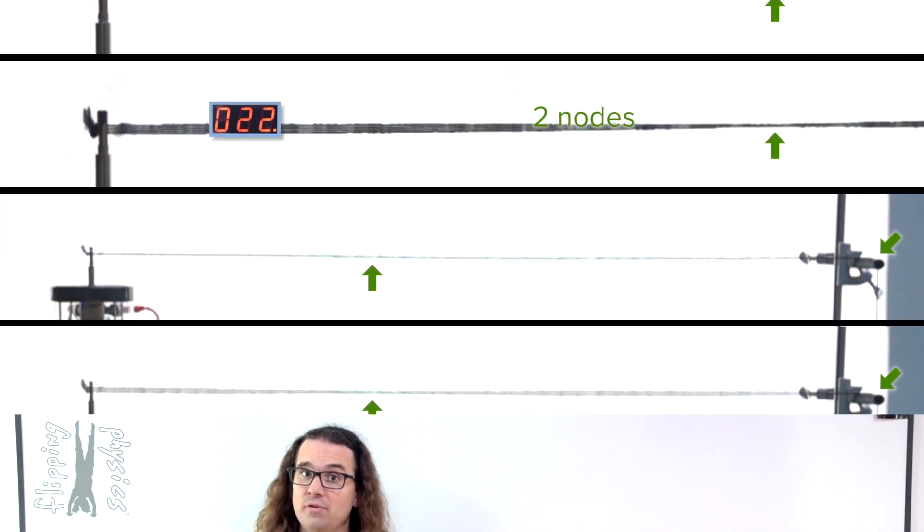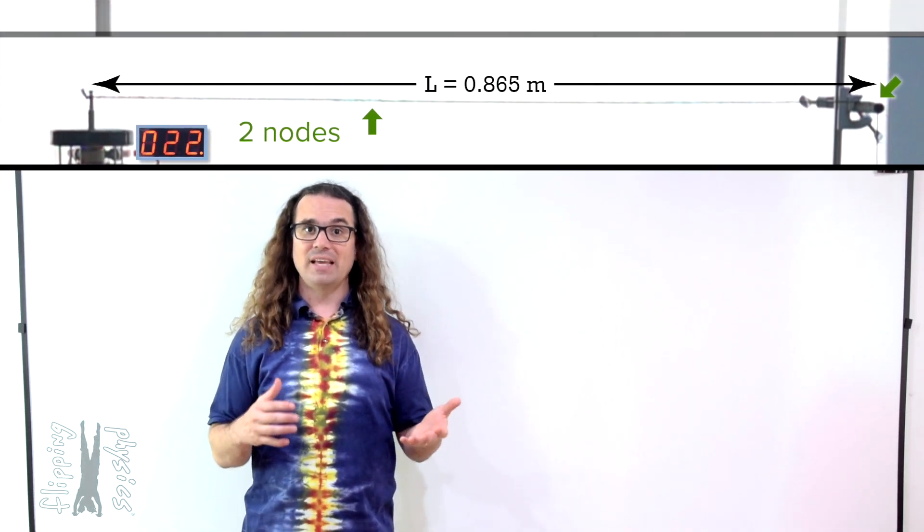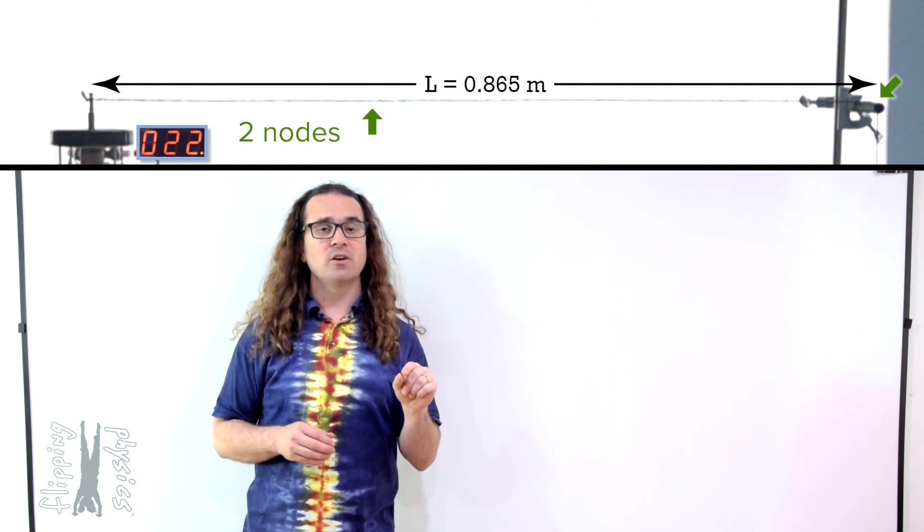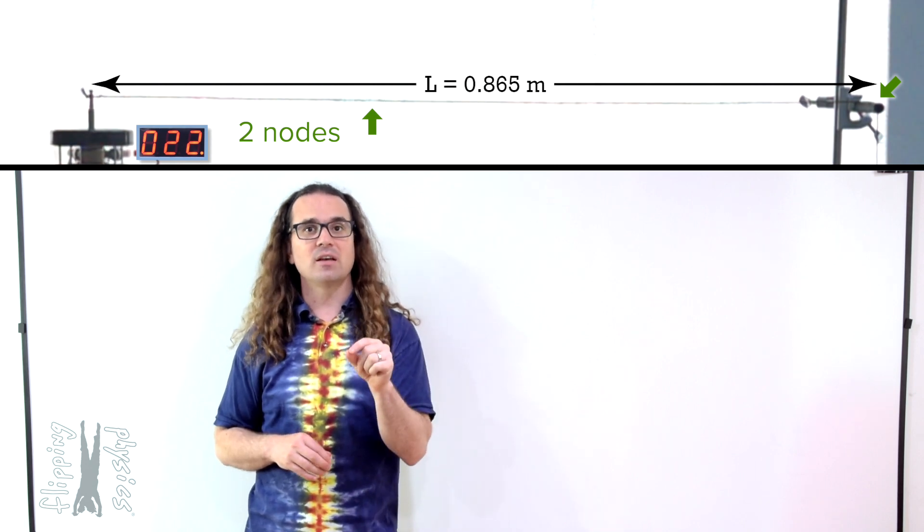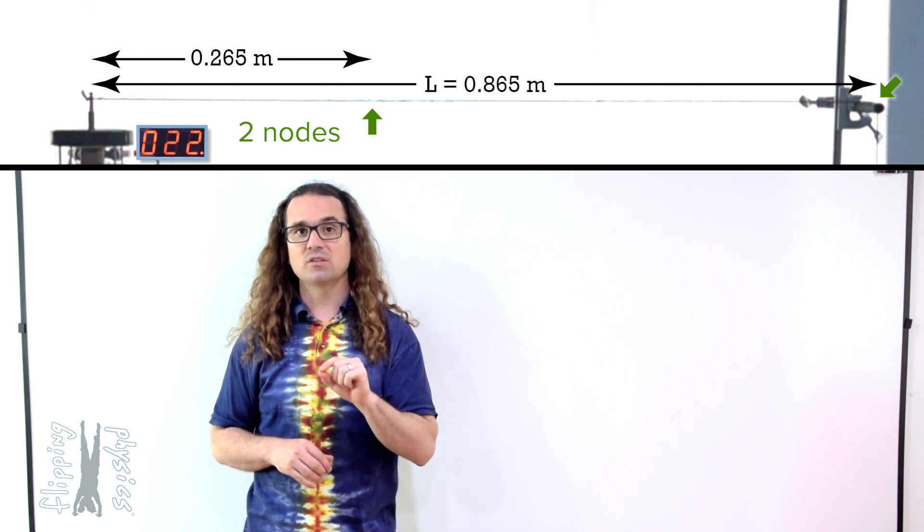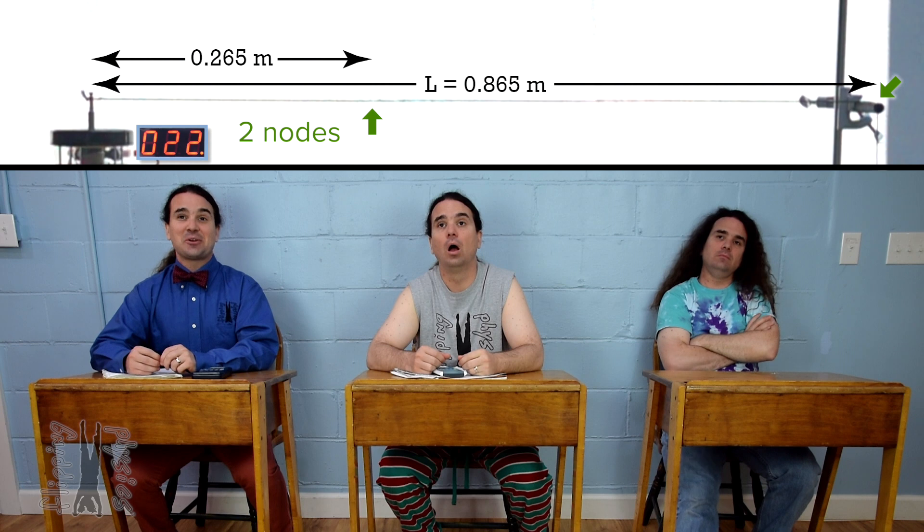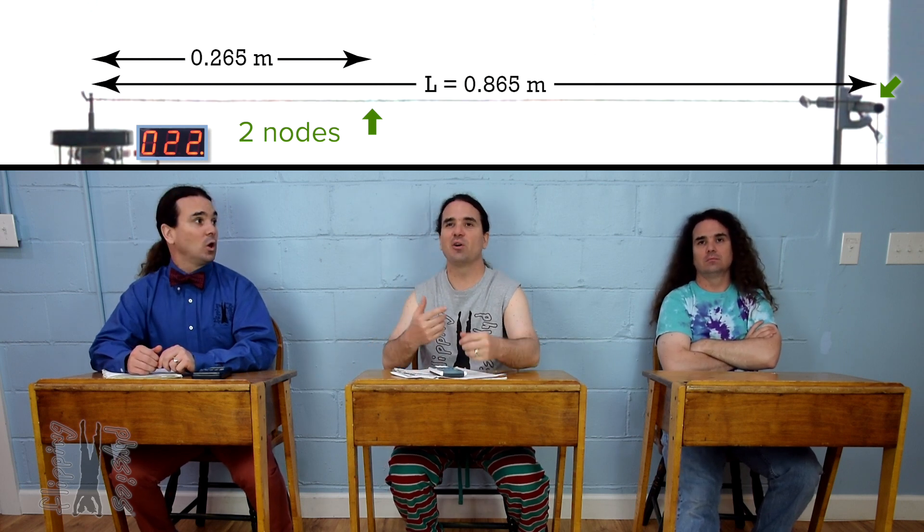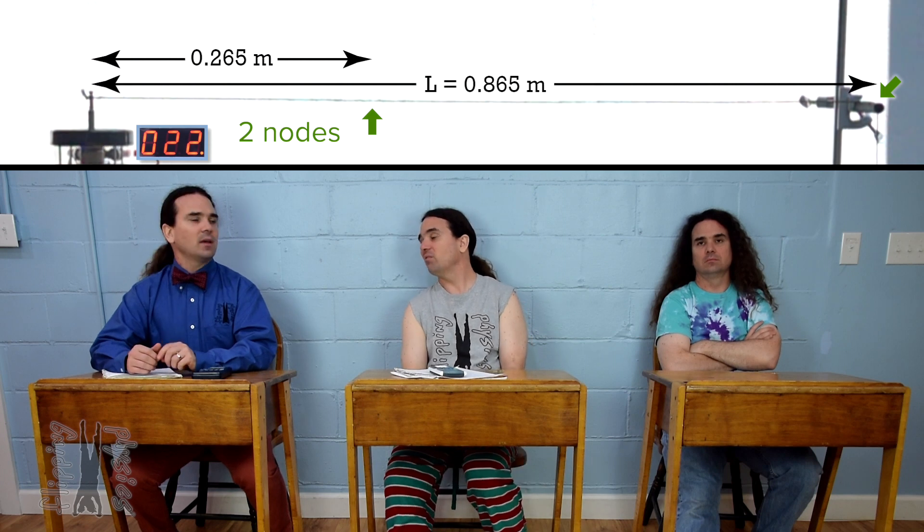Also, we know the length of the string is 0.865 meters from a previous lesson and I measured the distance from the oscillator to the node that is nearest to the oscillator to be 0.265 meters. That means we can determine the wavelength of the wave in this standing wave pattern. And once we know that, we can determine the speed of the wave.